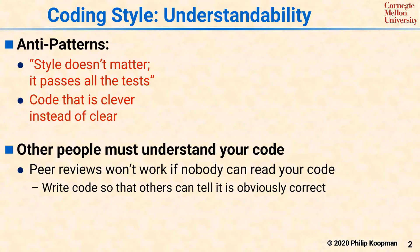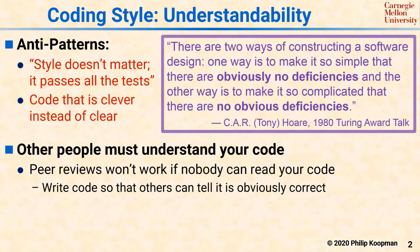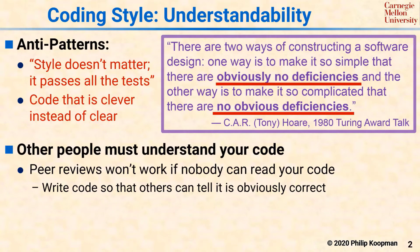A famous quote on this topic is from Tony Hoare in his 1980 Turing Award lecture. What he said was: there are two ways of constructing a software design. One way is to make it so simple that there are obviously no deficiencies, and the other way is to make it so complicated that there are no obvious deficiencies. What we're saying here is that you should write your code so that there are obviously no deficiencies — in other words, it is crystal clear with minimal effort that there are no bugs there.